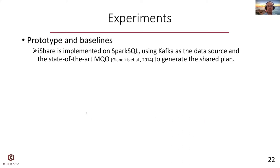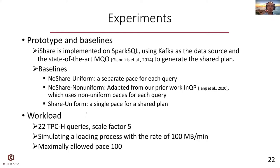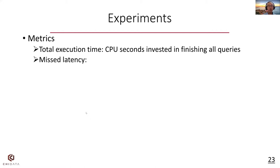We implement iShare in Spark SQL and use Kafka as the data source. We use the state-of-the-art MQO optimizer to generate the shared plan. We use three baselines: NoShare Uniform, which does not share queries and uses a single pace for each query; NoShare Non-uniform, adapted from our prior work in QP, which breaks a single plan into subplans at blocking operators and assigns different subplans different frequencies; and Share Uniform, which uses a single pace for a shared plan. We use all 22 TPC-DS queries with a scale factor of 5, simulating a loading process of 100 megabytes per minute with max pace 100. We report two metrics: the total execution time — the number of CPU seconds used in finishing all queries — and the missed latencies.